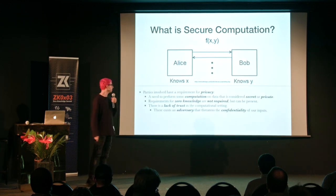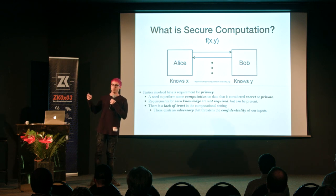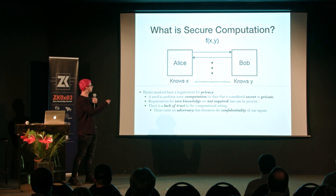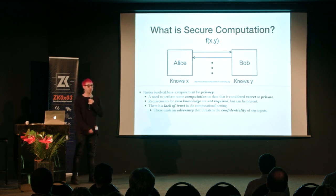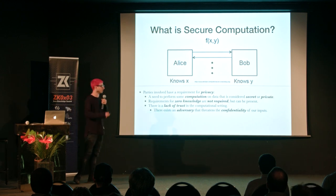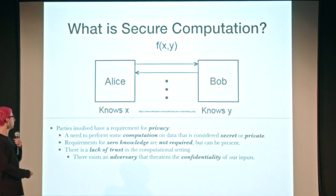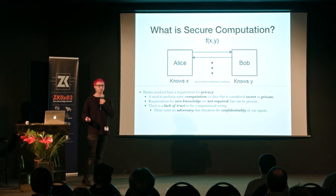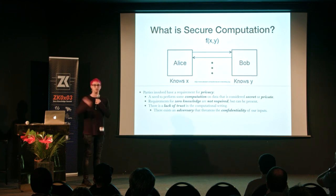What is secure computation? Typically there's a requirement for privacy. There are parties, and usually somebody needs to perform some function F on some inputs — in this case X and Y. There's usually a requirement for privacy where the data X or Y may not want to be revealed when doing some computation, or the output of that. This is a two-party secure computation scenario, but it's not specific to this — it can be a single party or multiple parties.